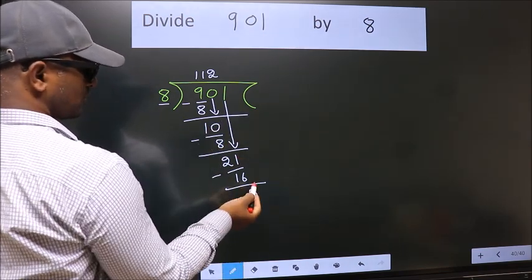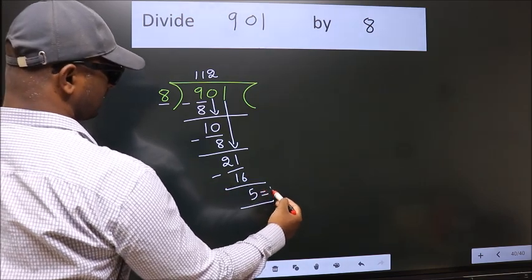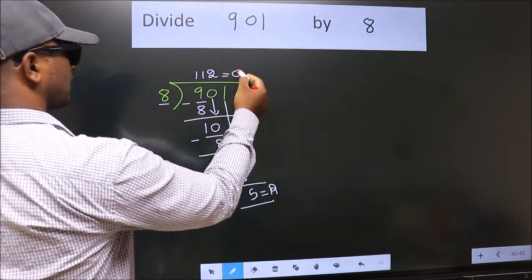No more numbers to bring down. So we stop here. This is our remainder. This is our quotient.